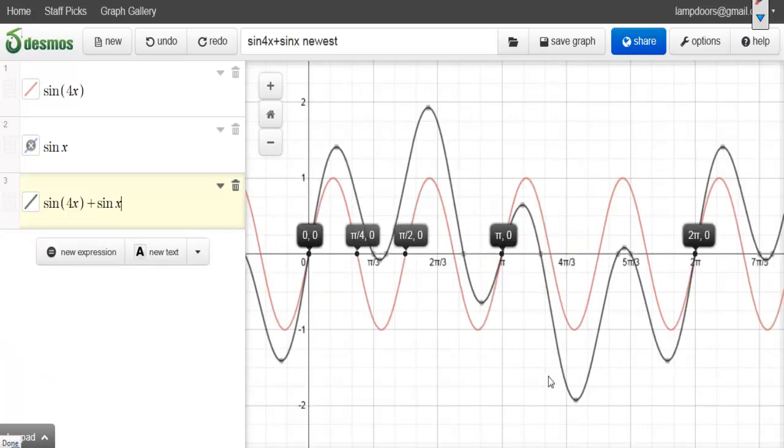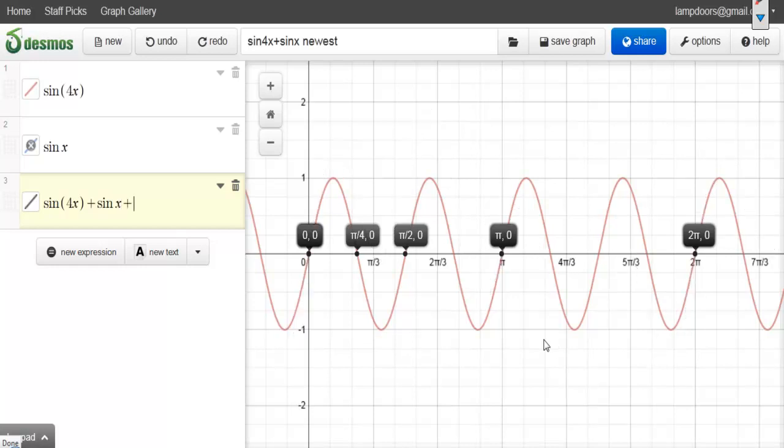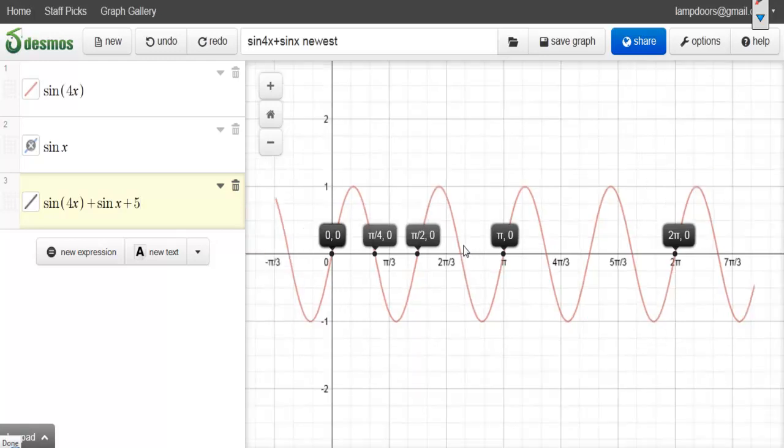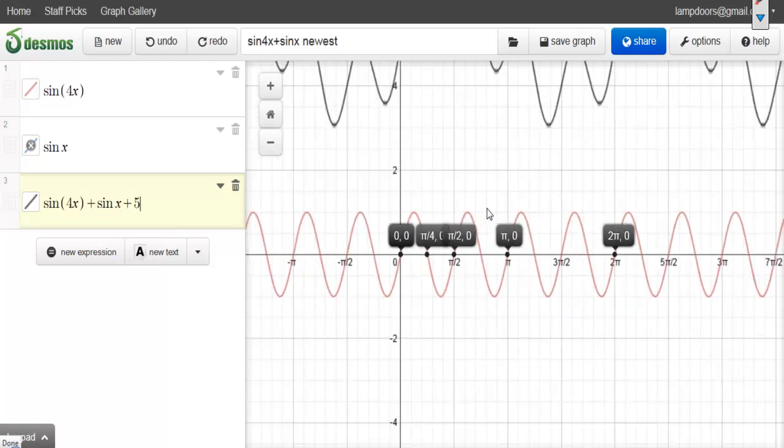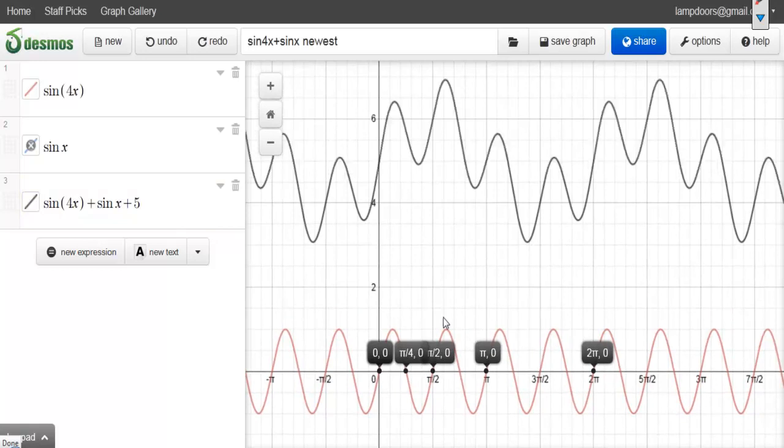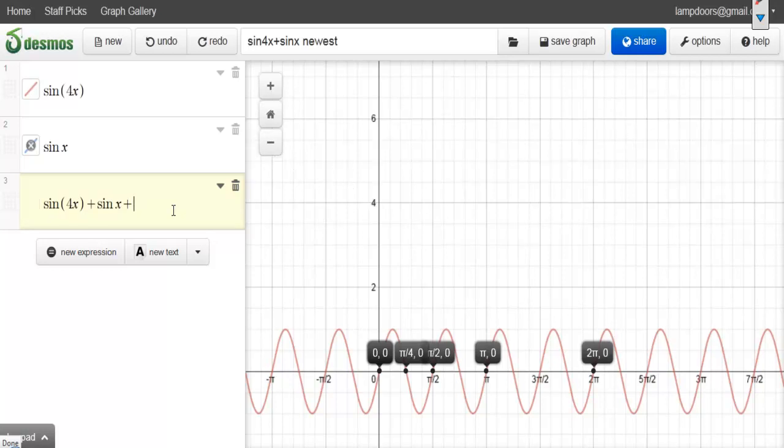Now, your problem actually asked for sine 4x plus sine x plus 5. Well, when I put the plus 5 in there, all it does is it shifts it up by 5. In fact, a really nice way to see vertical shifts in Desmos is to put just some sort of letter that you haven't used before.